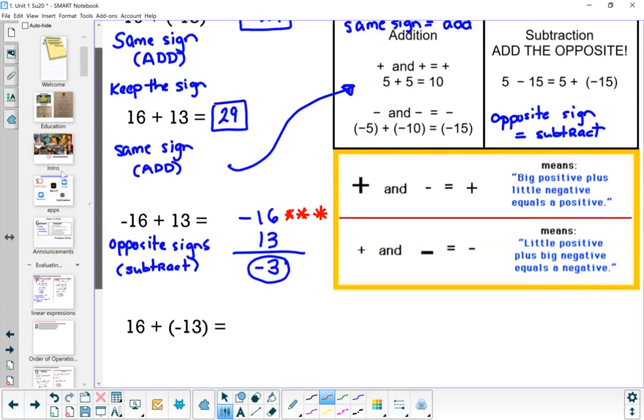Okay, the last example here, we have 16, which is positive, plus negative 13, which is negative. Again, you have opposite signs, so you subtract. I'm going to write the 16 first, the minus 13 second, subtract them: 16 minus 13, I get 3.